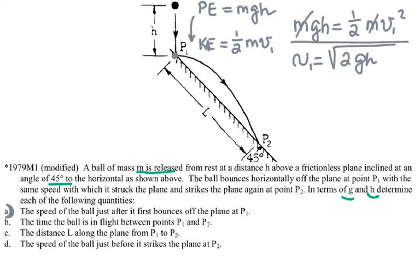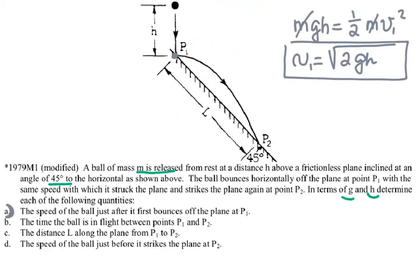Right before the ball strikes the plane, it has a velocity directed all the way down the incline. It then rebounces at exactly the same speed, so the speed just after the bounce is the square root of 2GH, directed horizontally.